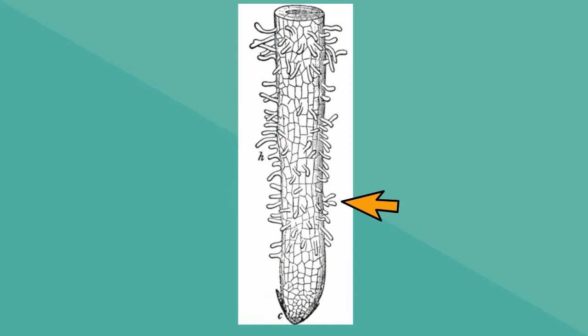Root hairs grow out of the surface of the root. These hairs increase the surface area and allow the root to absorb more water and nutrients.